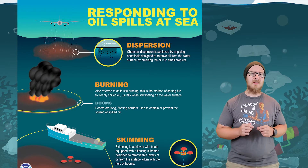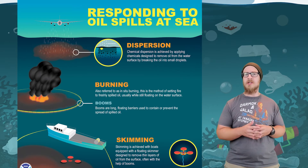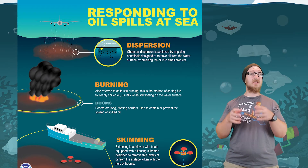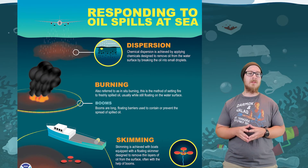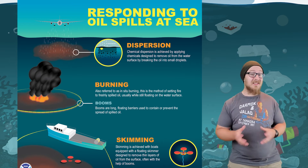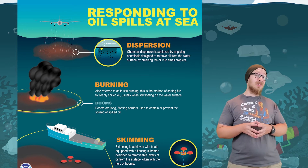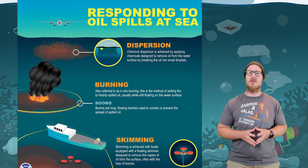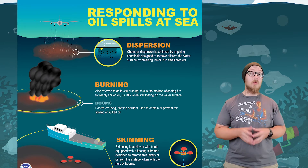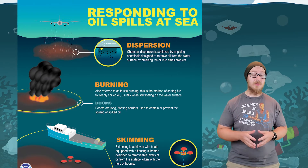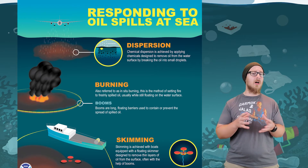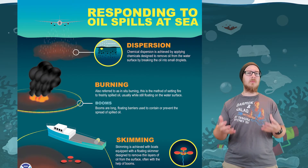Oil spills are cleaned in a few ways. Dispersion involves using chemicals that break oil into smaller droplets to remove it from the water, though the toxicity of dispersants can affect marine organisms, especially coral reefs. Sometimes oil is burned directly on the water, but toxic fumes can damage the environment and marine life — generally not a good choice. Skimming removes thin layers of oil from the surface and allows the oil to be recovered and reused, making it economically viable, but ocean debris frequently clogs skimmers, making the process very time-consuming.